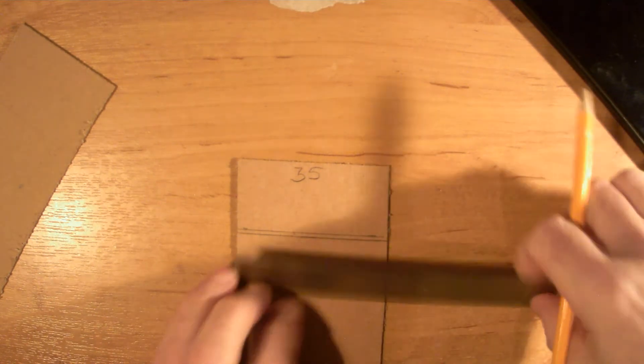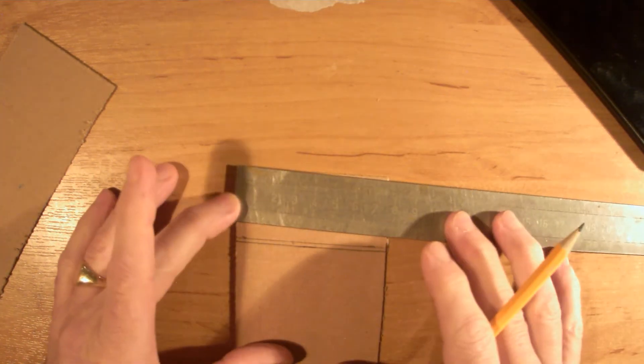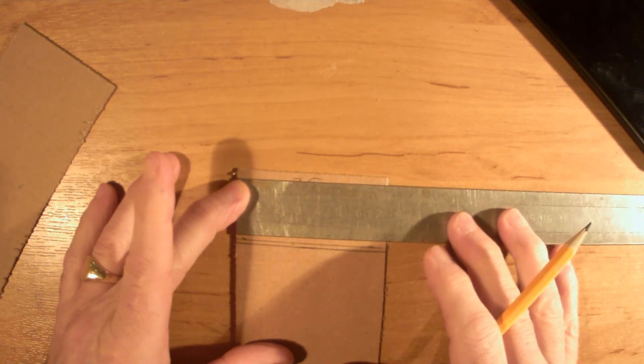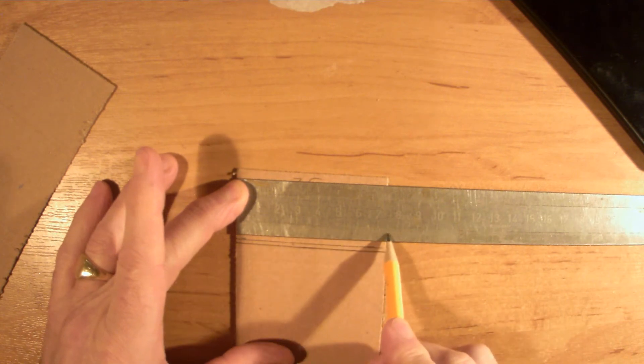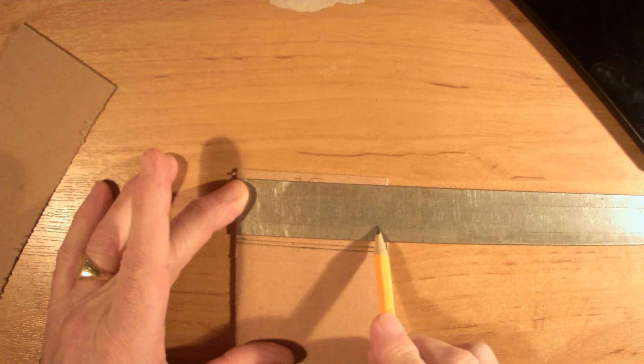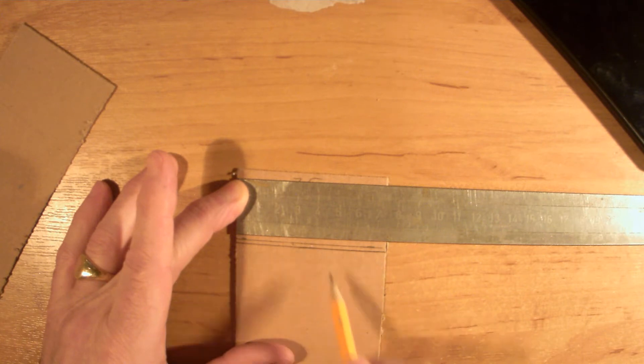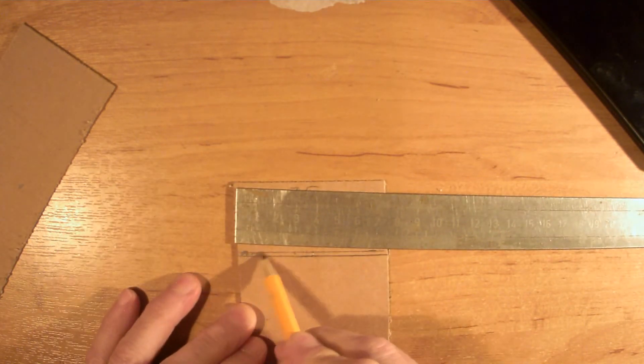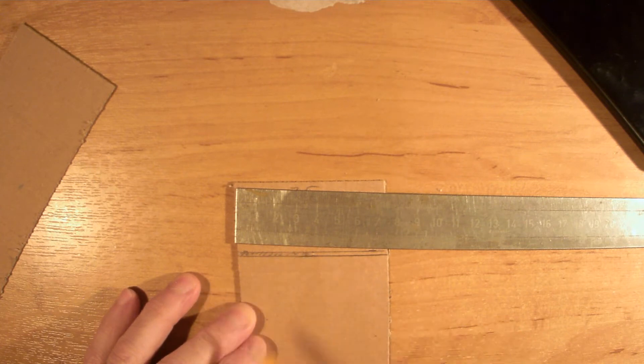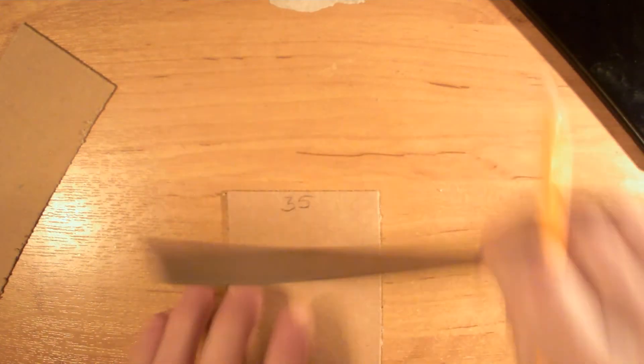It's called a halving joint, because we are going to cut halfway through the card. My card is 75mm wide, and we want half of 75. If I do half of 70, that's 35, and half of 5 is 2.5, so that makes 37.5. And I'm just going to cut away half of it, so I've shaded the bit I've cut away.